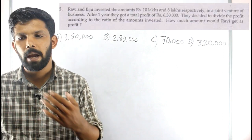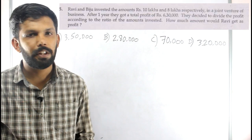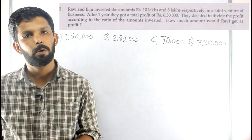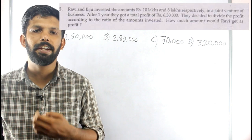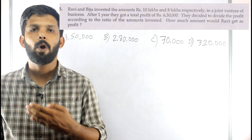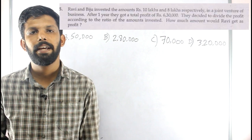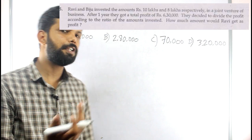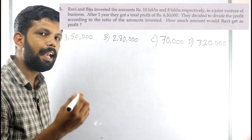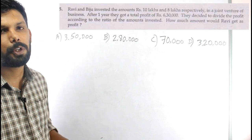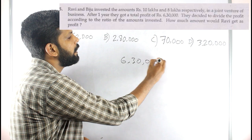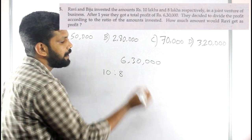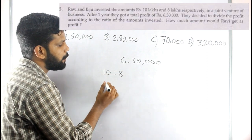This is a difficult question you can see in competitive exams. We have investments of 10 lakhs and 8 lakhs — let's ignore the zeros for simplicity. We invest 10 lakhs and 8 lakhs. The total profit is 6 lakhs and 30 thousand. We have a ratio of 10 to 8, which simplifies to 5 to 4.